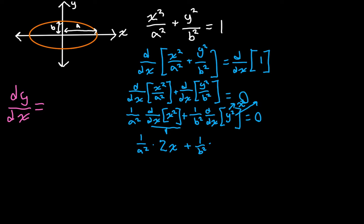The outer function is x squared and the inner function is y. Taking the derivative of the outer function gives 2x, but we plug in y to get 2y, and then we multiply by the derivative of the inner function, which is dy/dx. So the full expression becomes 2x over a squared plus 1 over b squared times 2y times dy/dx, and that equals zero.